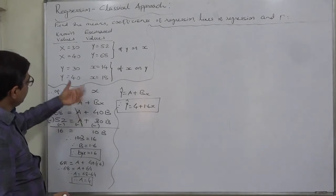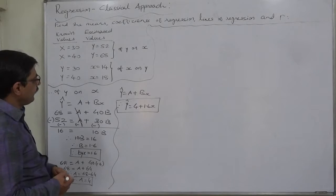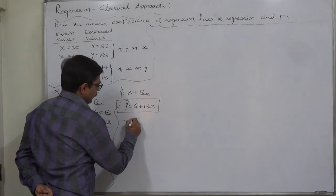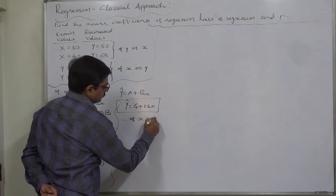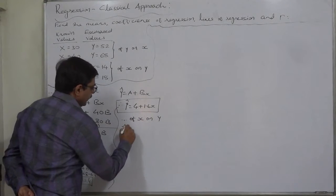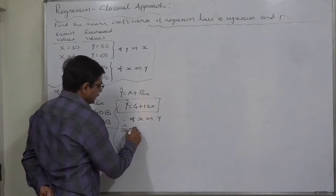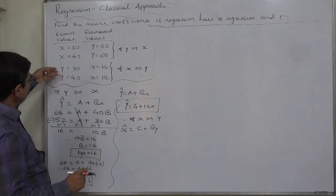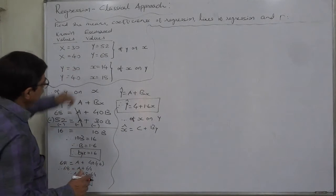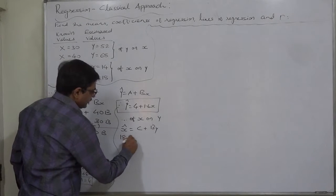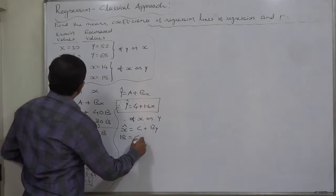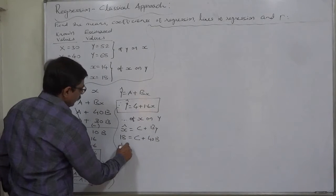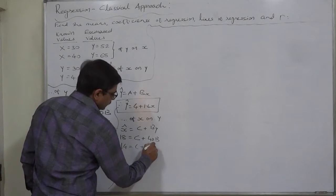Similarly, on the basis of the line of regression of x on y we can find another two things. The standard form of regression of x on y is x equals c plus by. Let's substitute the two known values of y and two estimated values of x: x is 18 when y is 40, and x is 14 when y is 30.